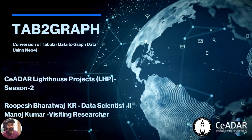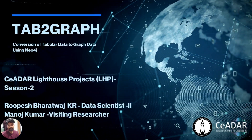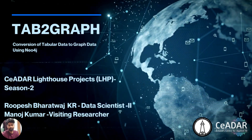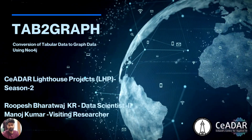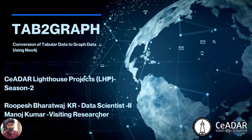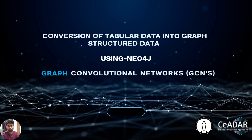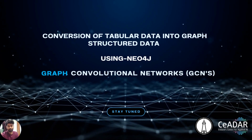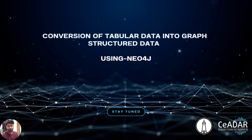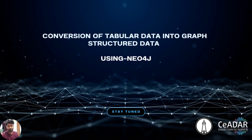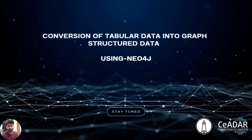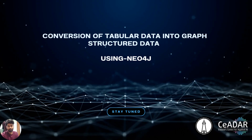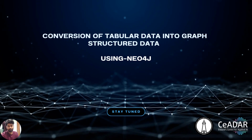Hello everyone, welcome to SEDA Lighthouse Project Season 2. Today we're going to discuss Part 2 of the TAP to Graph series — the conversion of tabular data to graph data using Neo4j. I'm Rupesh Baradwaj Kaya, with my colleague Manoj Kumar. Graph Convolution Networks require input data to be in graph structure format, and today's biggest challenge is how to convert tabular data into graph formatted data for use by GCNs.